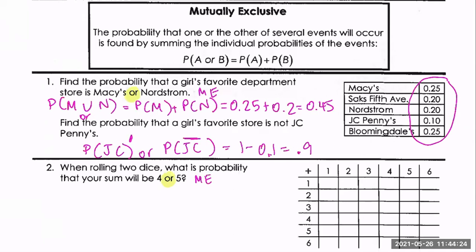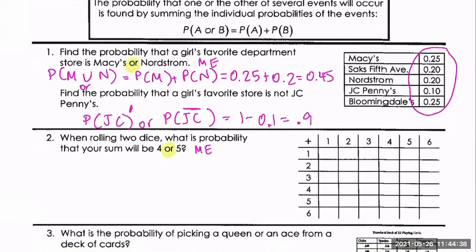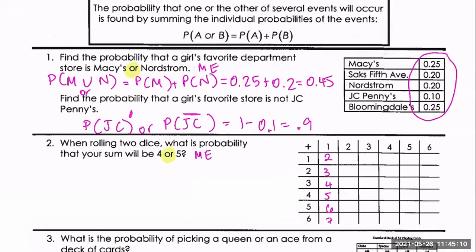We'll assume a standard six-sided die. If you roll the first die these are the possibilities; if you roll the second one these are the possibilities. How many total possible outcomes do you have? 36 — six times six. Let's list out all the sums. For example, rolling a one and a one gives a sum of two. Fill it all out — you'll notice that the diagonals are all the same.